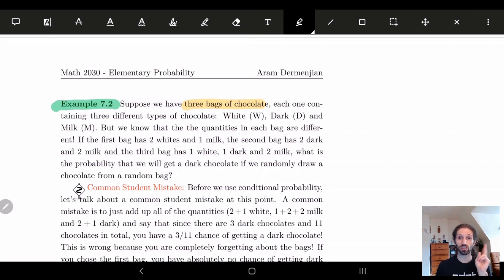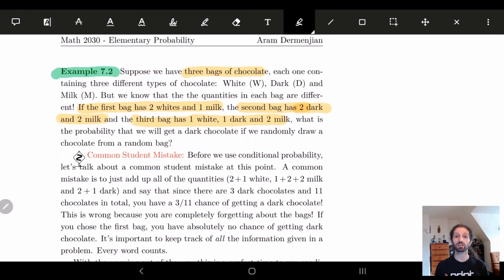In the first bag, we have two white chocolates and one milk chocolate. In the second bag, we have two dark chocolates and two milk chocolates. And the third bag has one white chocolate, one dark chocolate, and two milk chocolates. Now the question is: what is the probability that we will get a dark chocolate if we randomly draw a chocolate from a random bag?